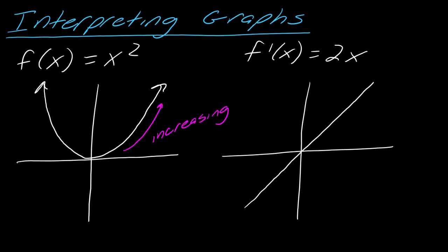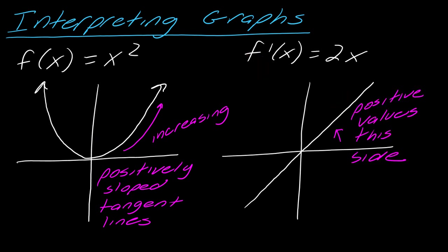And vice versa, on the other side, so now I'm increasing. So if you think about this side, so then I'm going to have positively sloped tangent lines on this side. And so then if I compare that to my derivative graph.